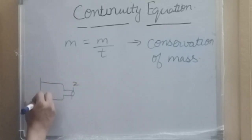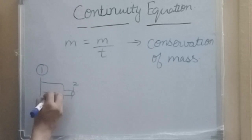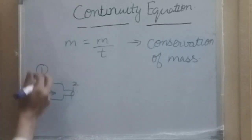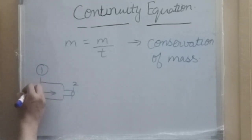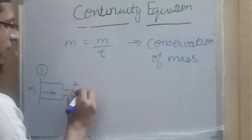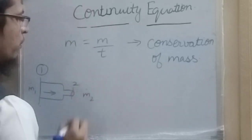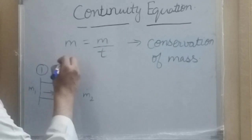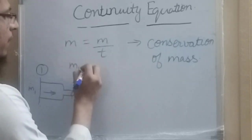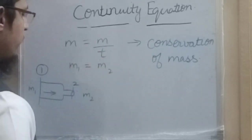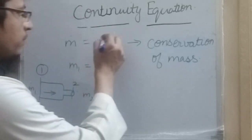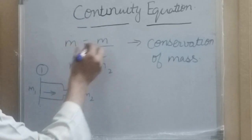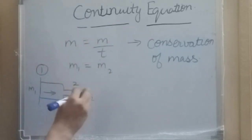Flow takes place from section 1 to section 2. We will have mass flow rate m1-dot at section 1 and m2-dot at section 2. According to the continuity equation, m1-dot should be equal to m2-dot if there is no inflow or outflow between the sections.